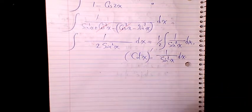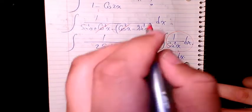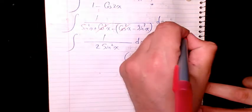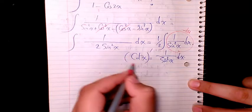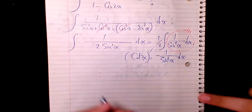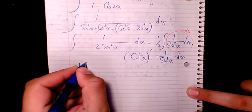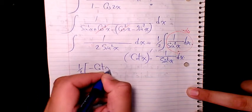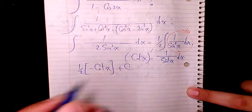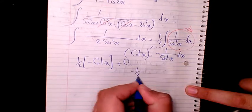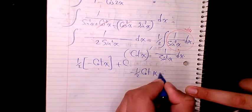So that will be basically negative du if you consider u as cotangent. So it's going to be 1 over 2 times negative cotangent x plus c, which is negative 1 over 2 cotangent x plus c.